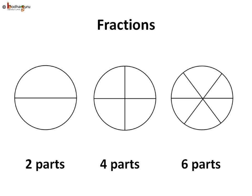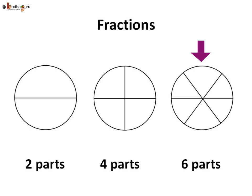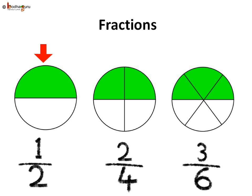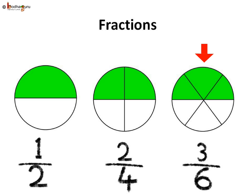Take another example. Let's make two parts of a whole, then four parts of another whole, and lastly six parts of another whole. Now take one part out of the two equal parts, two parts out of the four parts of the whole, and lastly three parts out of the six parts of a whole.